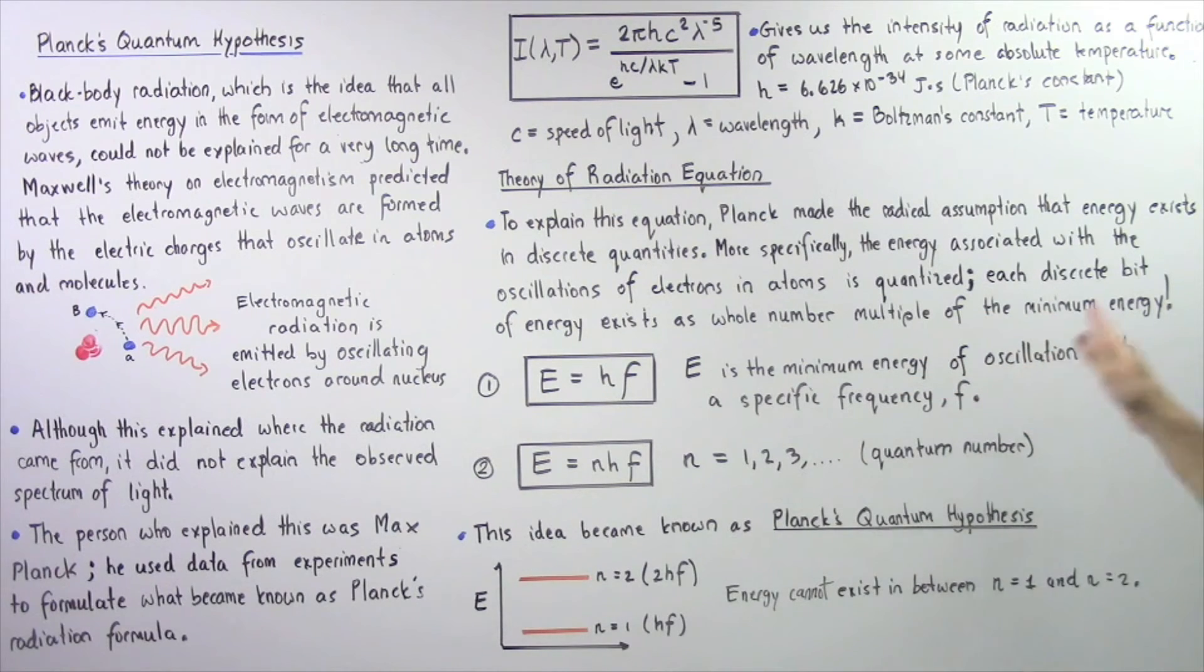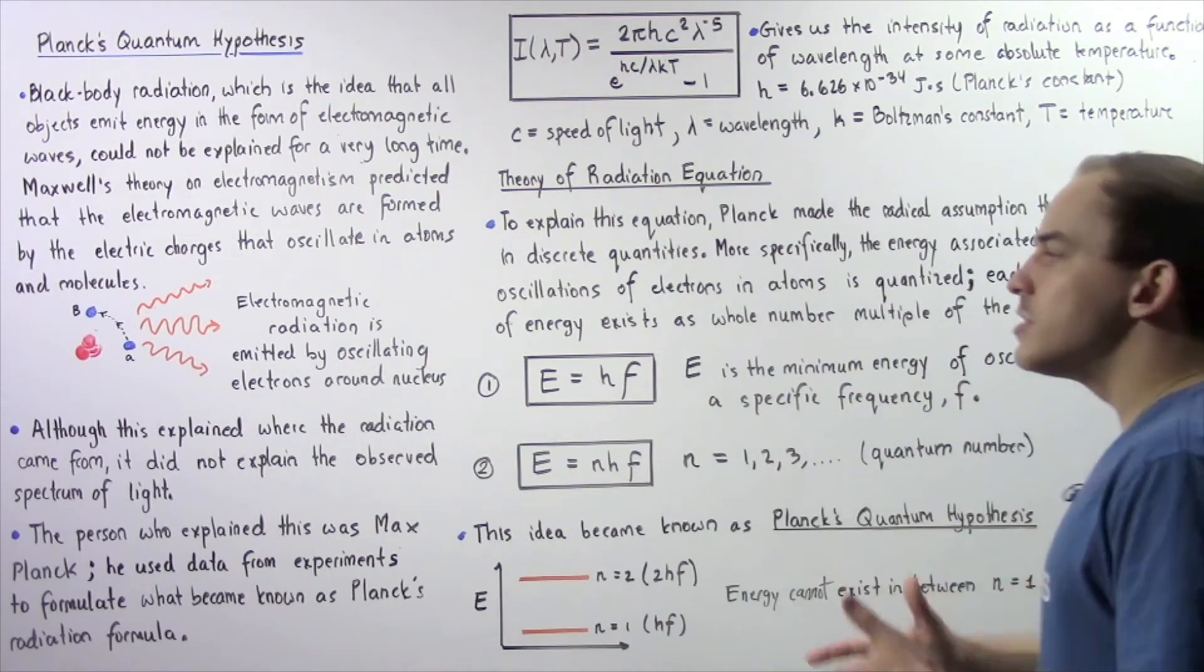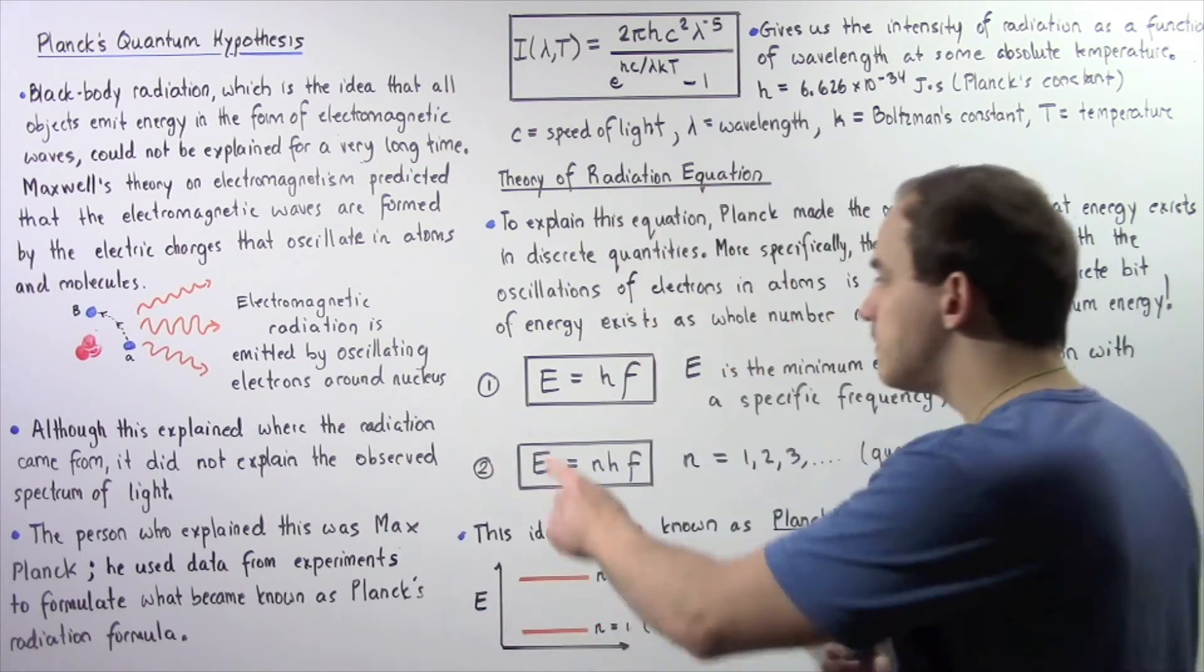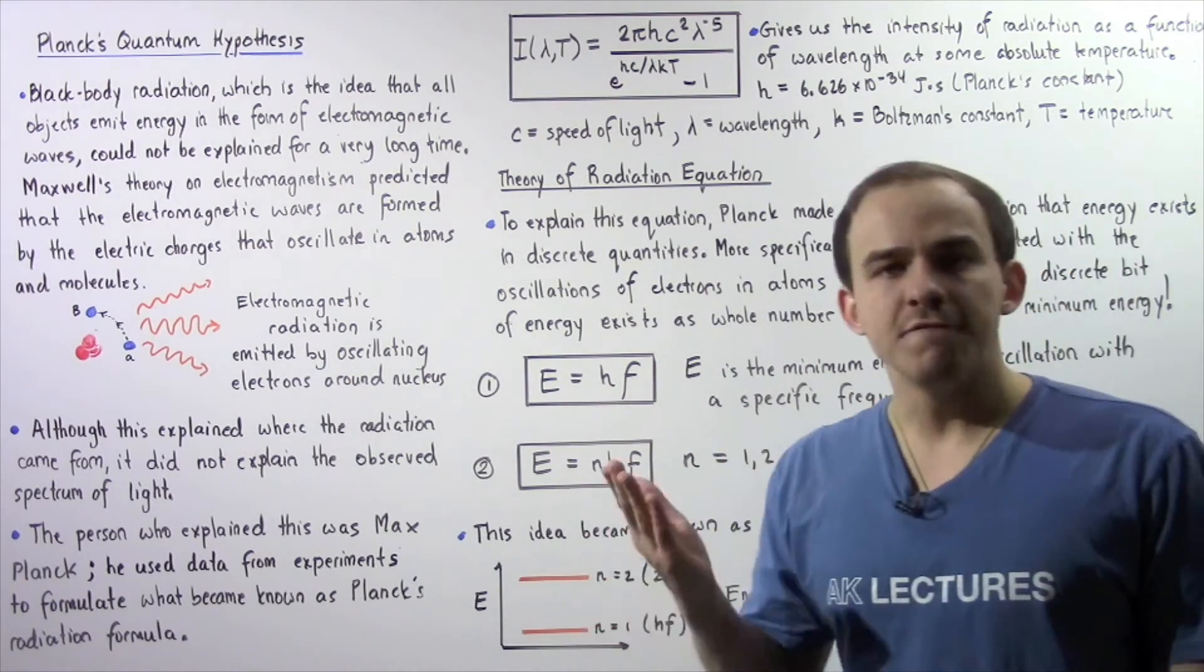Now the equation given by equation one gives us the minimum quantity of energy given by E for some specific frequency of oscillation. So E is the minimum energy of oscillation with a specific frequency F.